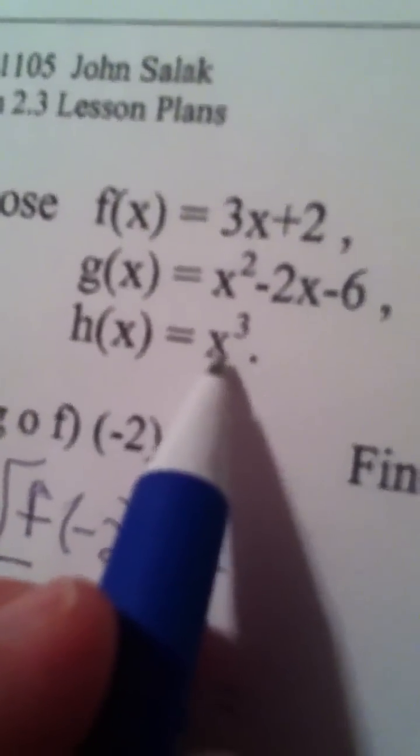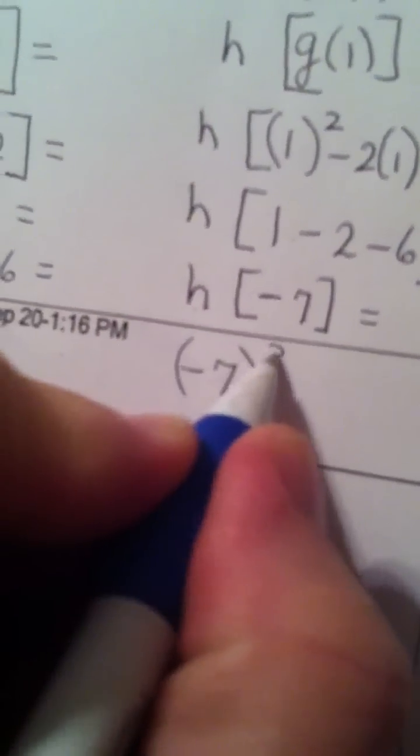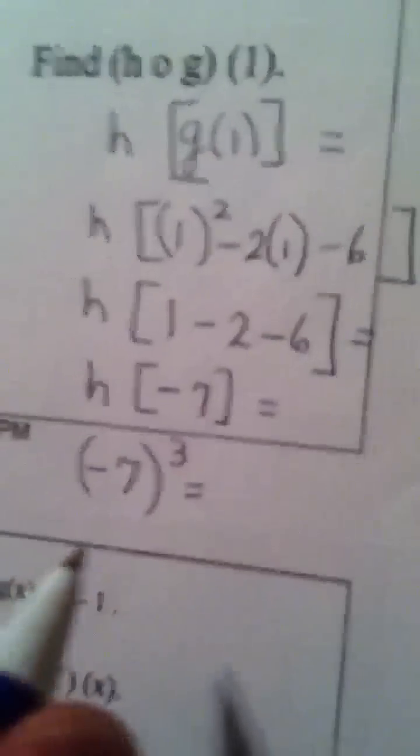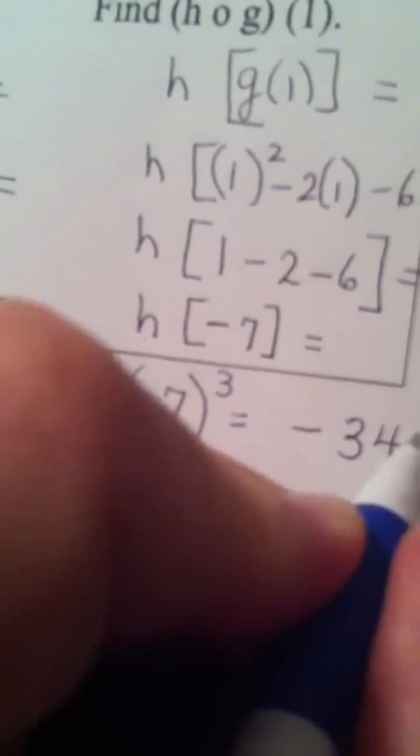h of x is, in this case, whatever, cubed. So negative 7 raised to the third power, and I believe that's going to be a negative 343.